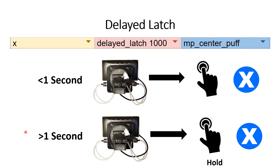This can be helpful in games where a button either needs to be tapped or held down for a long duration. For example, in Red Dead Redemption 2, the L1 button can be tapped to holster or unholster your gun, or if held down, it opens the weapon wheel. So delayed latch allows the user to either tap to holster their gun or hold it down to open the weapon wheel.